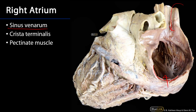What we're looking at here is a posterior view of the heart. Here's the diaphragmatic surface, and we can see the left or pulmonary surface there. The base of the heart has been incised and pushed up, and the wall of the sinus venerum has been reflected to the midline.